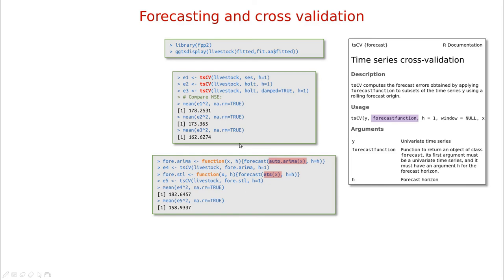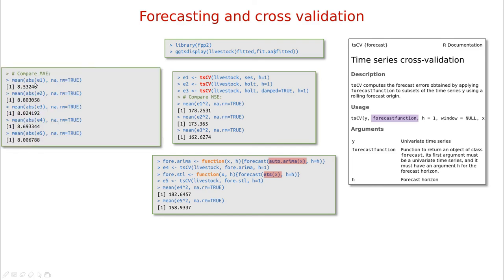Why is that? Probably because ARIMA is trying to force smaller correlations and then you have to include a lot of lags. The good thing with ETS models here is that you're capturing the trend very well, and the remainder is simply pure noise. We can also try different metrics — like the maximum absolute error — to focus not just on the mean error but to also reduce the impact of outliers. In this case, ETS is also the best model.